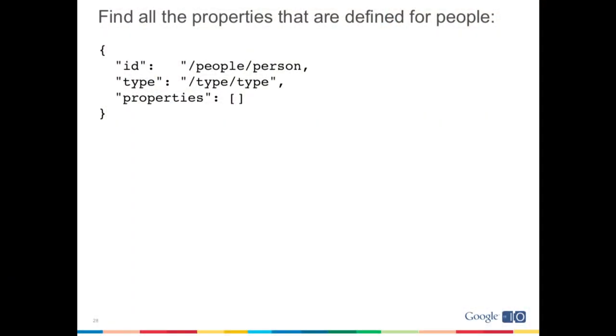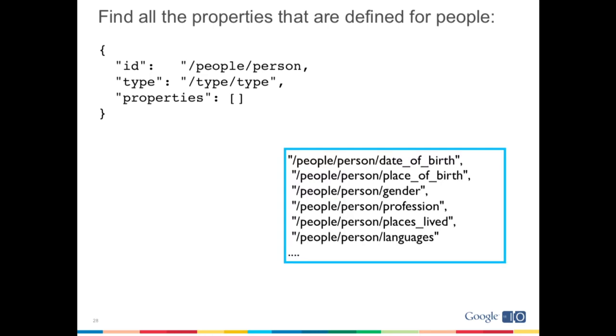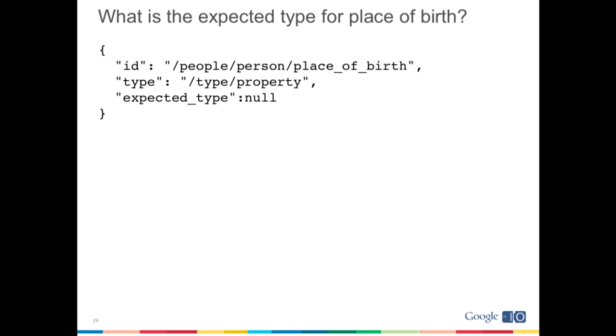What's really fun is that all of this is done in the graph — meaning we can use our MQL query capabilities to interrogate these structures exactly the same way we've been interrogating Jane Austen. In fact, we can do both at the same time. For the object /people/person, we know its type is /type/type, and we can ask for all of its properties — getting back place_of_birth, gender, profession, and more. For place_of_birth, we know it's a /type/property with an expected_type property, so we can find out what we should expect at the other end — and that tells us it's a location.